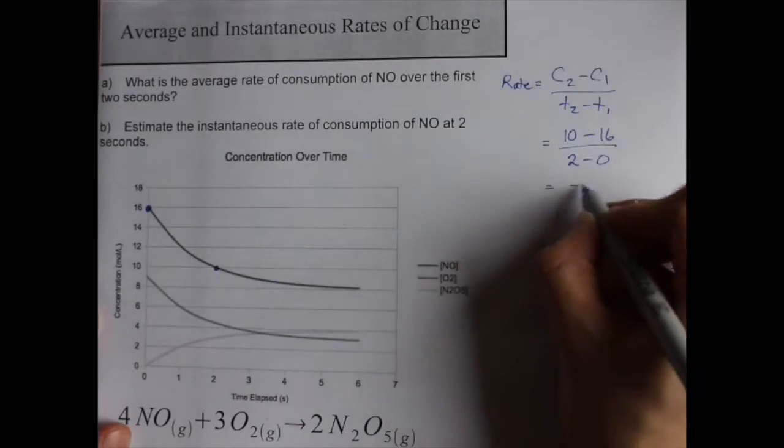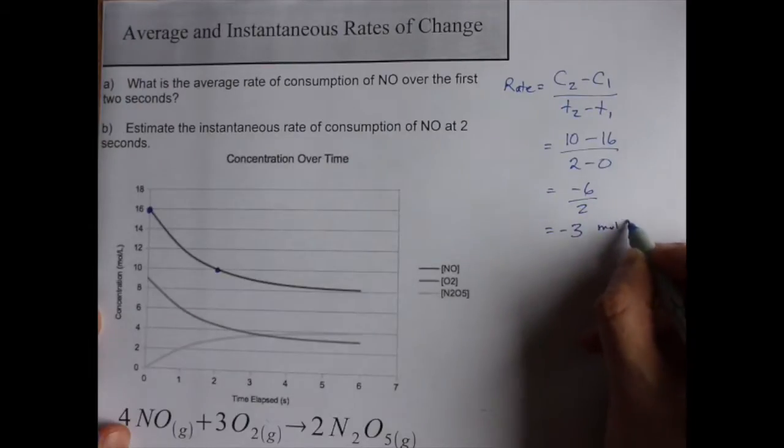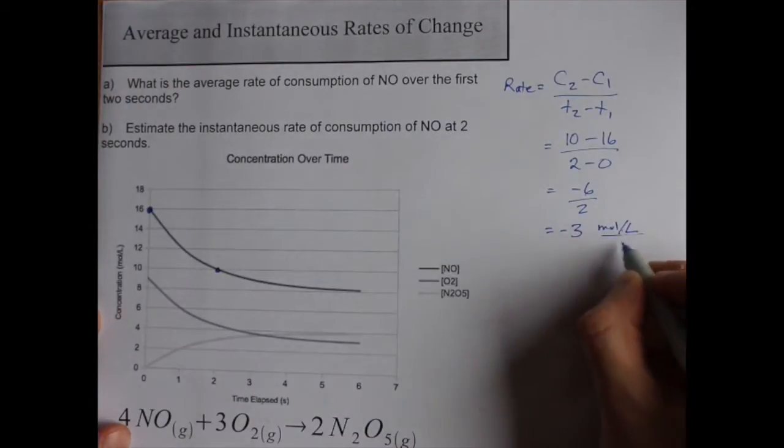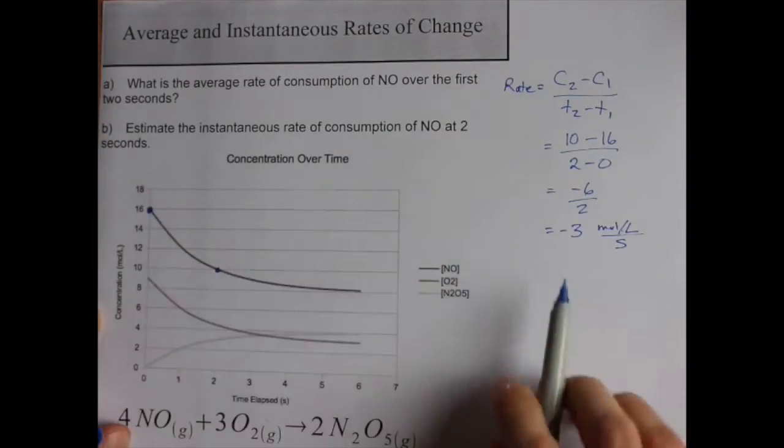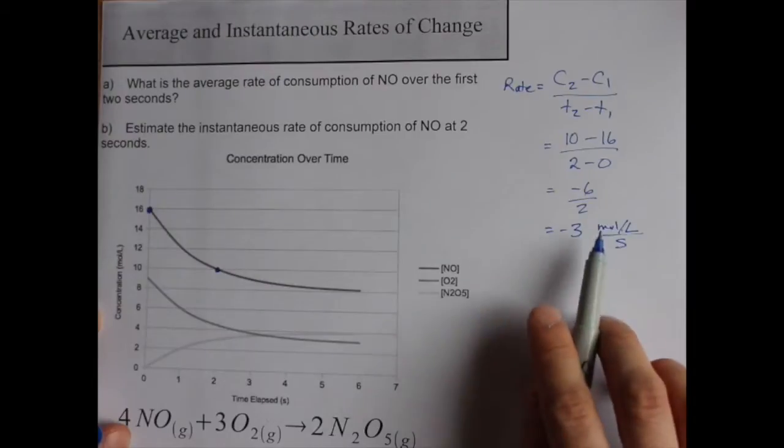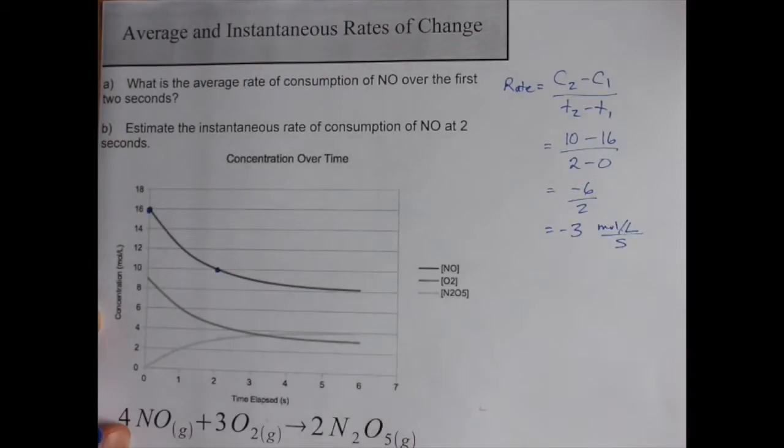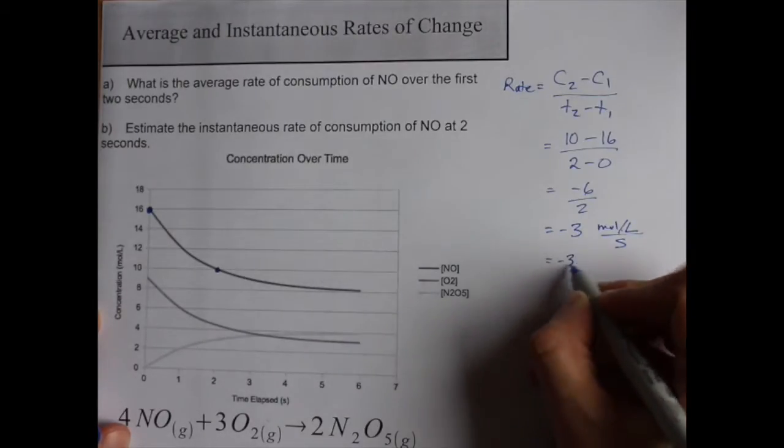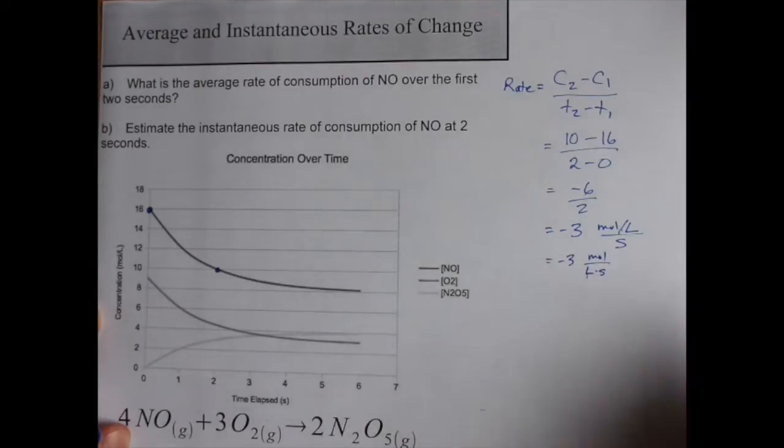I end up with negative 6 over 2, which is negative 3 moles per liter per second. The units here for rate will always be moles per liter per second or whatever your concentration unit is over whatever your time unit is. Some teachers will write that as moles over liters seconds. These are the same thing.